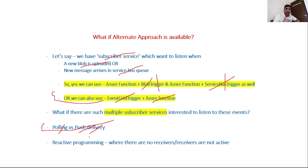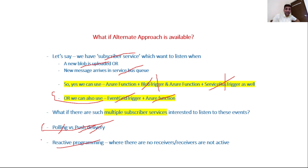In summary, with Event Grid we can achieve reactive programming. Receiver services may not be active, but whenever a particular event occurs, Event Grid notifies that service, which then becomes active and can start a chain of actions — executing multiple services downstream. Thanks for listening.